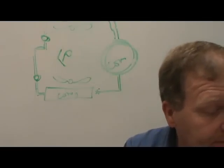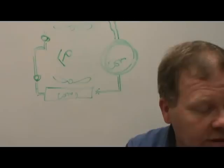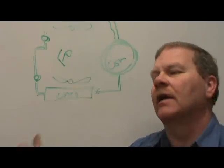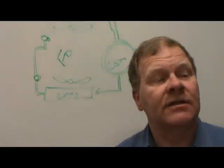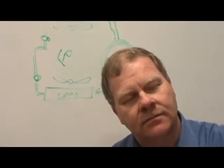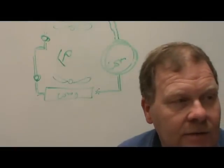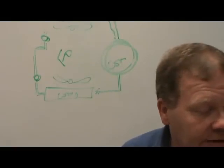Most AC systems cycle the compressor clutch in regular intervals to control what? Evaporator temperature — that little switch on the low side is preventing the evaporator from freezing up. In a non-cycling clutch system, evaporator freeze-up is prevented by controlling evaporator pressure.